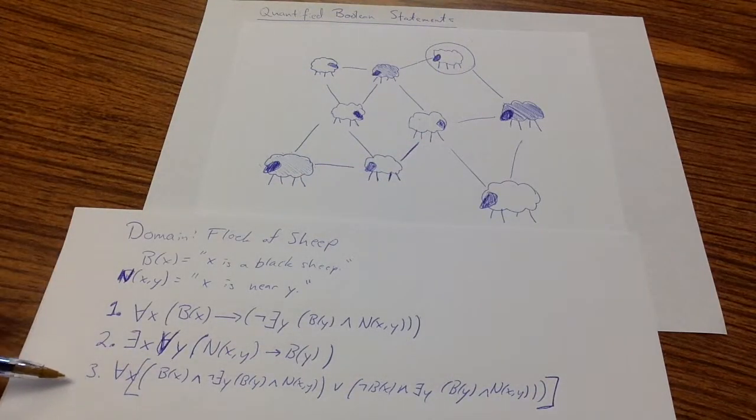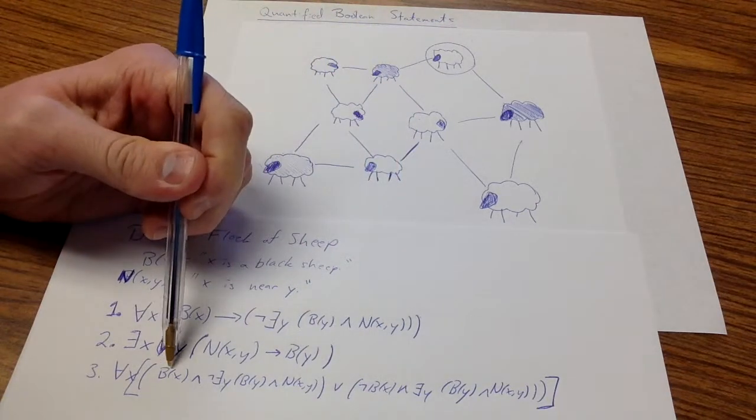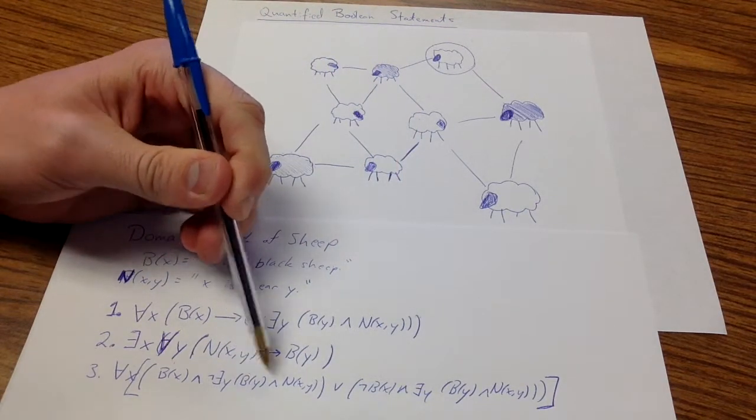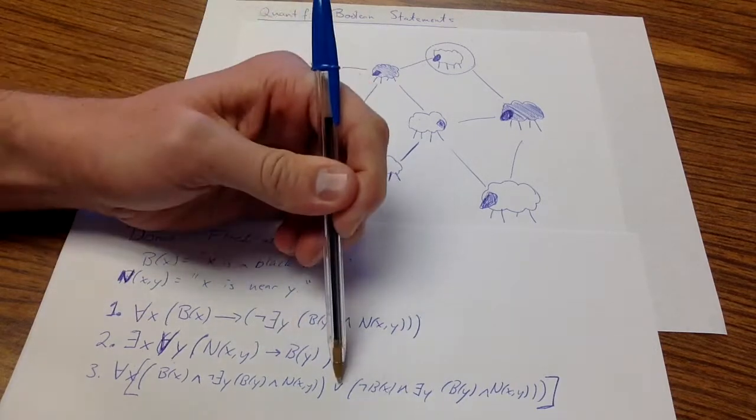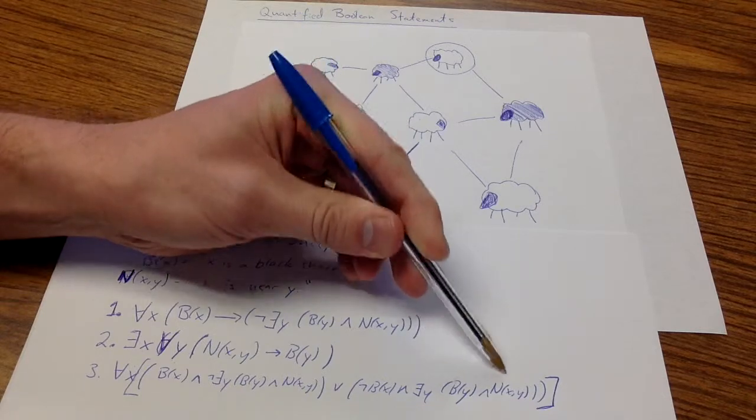Let's look at this third and final quantified Boolean statement. It's a really long one, so let's step through it. For all sheep x, either x is black and there does not exist a y such that y is black and nearby x, or x is not black and there exists a y such that y is black and nearby.